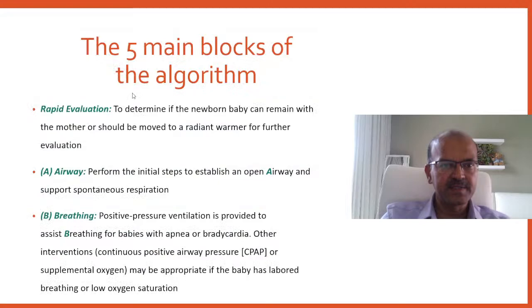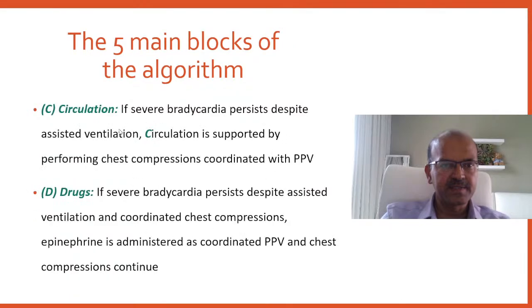The NRP algorithm has five main blocks: initial rapid evaluation (whether the baby stays with the mother or goes to a radiant warmer), airway assessment and positioning, breathing assessment (if apneic or bradycardic — give PPV; if breathing but not oxygenating — consider CPAP or supplemental oxygen), circulation (if severe bradycardia persists despite ventilation — chest compressions coordinated with PPV), and medications — mainly epinephrine and volume if there is no response.